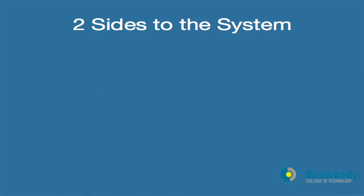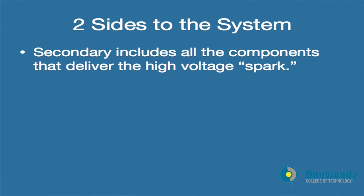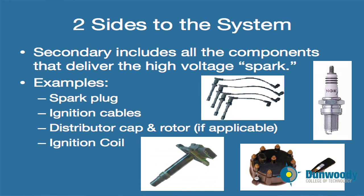The secondary side includes all of the components that deliver the high voltage spark to the system. Some examples on this side include the spark plug, which actually ignites the air-fuel mixture, the ignition cables which route the spark from the coil to the spark plug — though these may not be on every system — and the distributor cap and rotor, if applicable, as well as the ignition coil again.